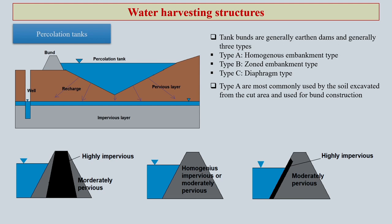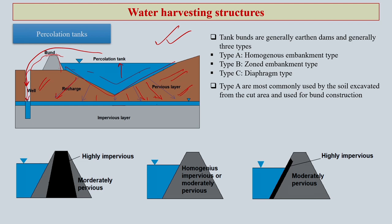How do percolation tanks work? As you see in this picture, this is the water body — the tank — you can have a small bund here so if the water level rises it should not overflow. But if at some time, due to excess rainfall, the water crosses this bund, it can go into this well and again recharge the groundwater. This percolation tank will directly recharge groundwater, as shown by the arrows, and excess water going over the bund will go into the well and also recharge the groundwater.